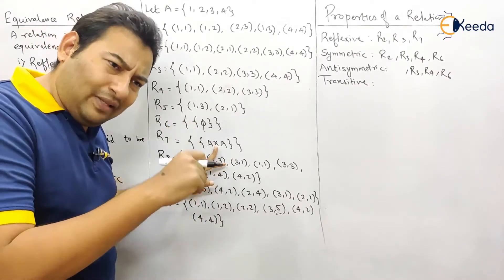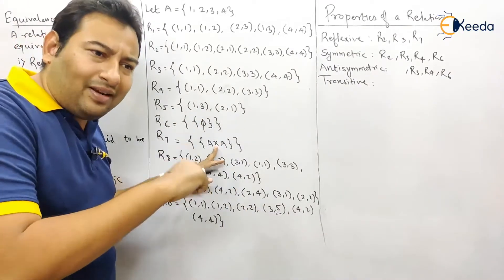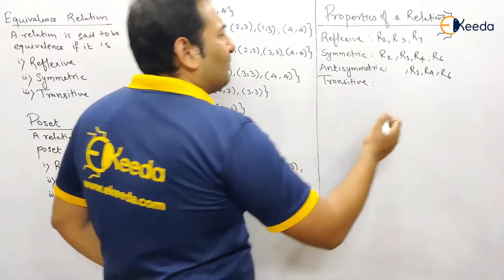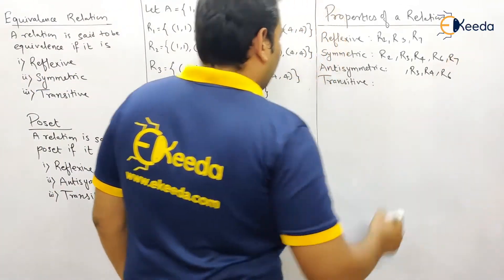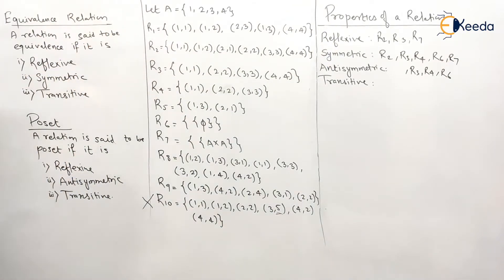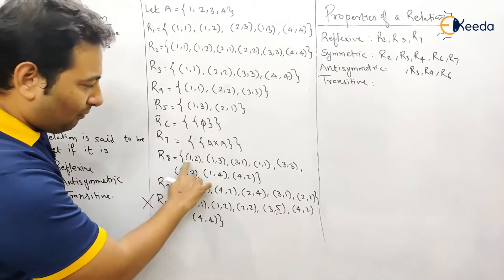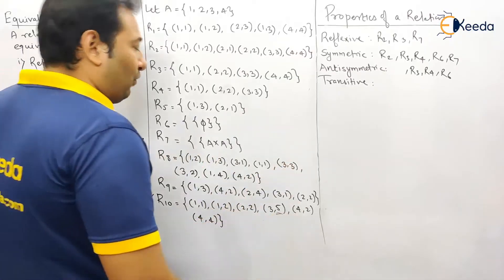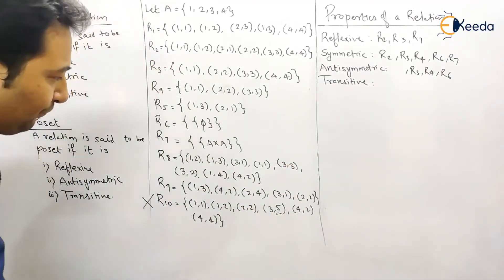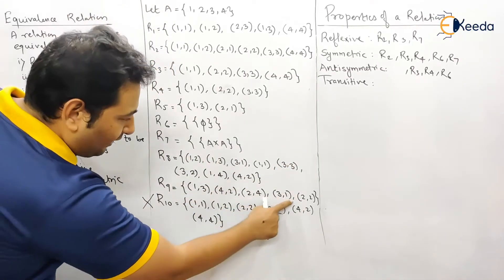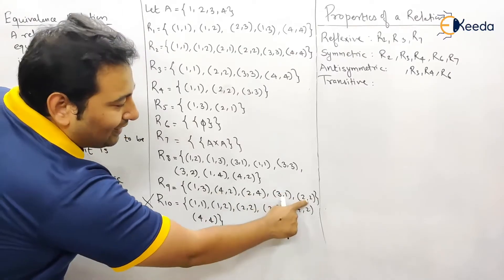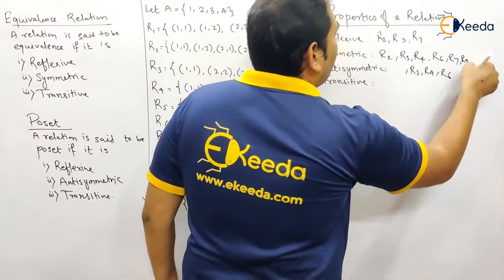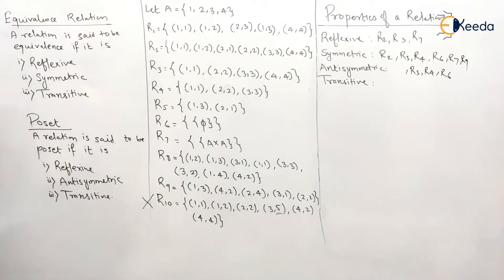For R8: (1,2) is present but (2,1) is not found — R8 is not symmetric. For R9: pairs (1,3), (3,1), (4,2), (2,4) are all present — R9 is symmetric. That completes the symmetric check.